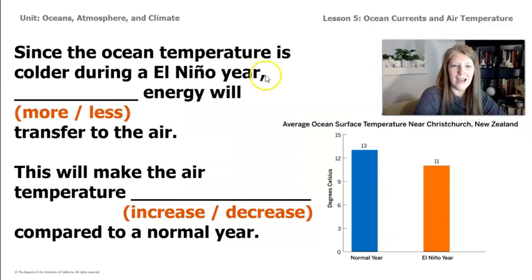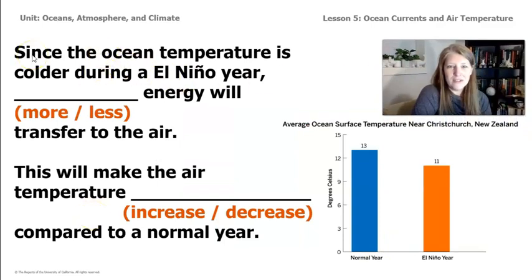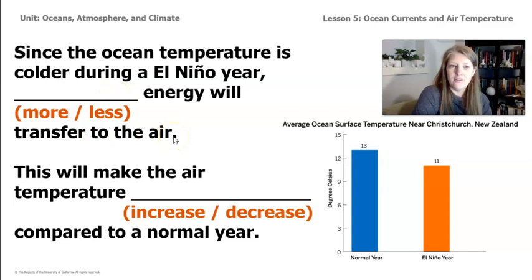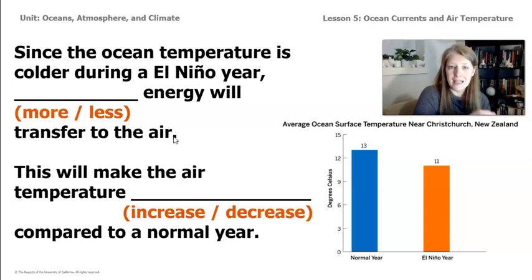Let's take a look at these two sentences. Since the ocean temperature is colder during El Niño years, would there be more energy or less energy transferring to the air? If the ocean temperature is colder during El Niño years, then there's going to be less energy transferred during an El Niño year.